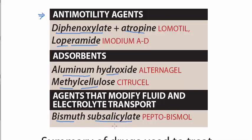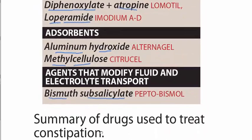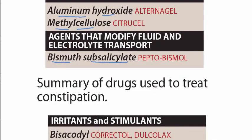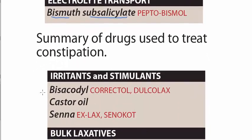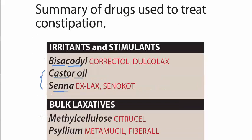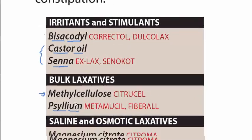Then the drugs used to treat constipation. In constipation we have irritants and stimulants: bisacodyl, castor oil, and senna — these are botanical products. And then the bulk laxatives: methylcellulose and psyllium — note the P is silent in psyllium.